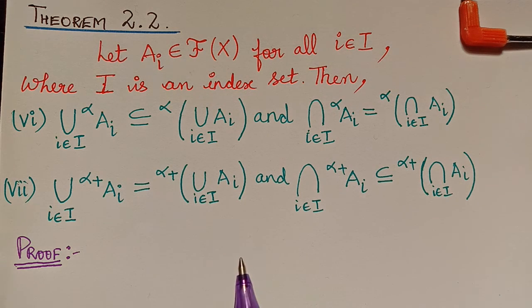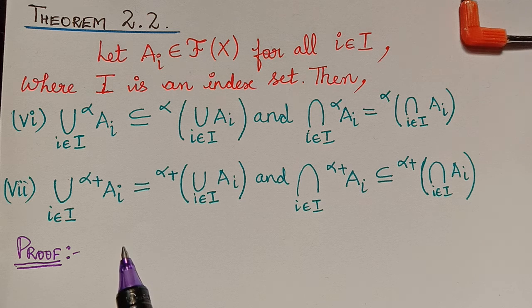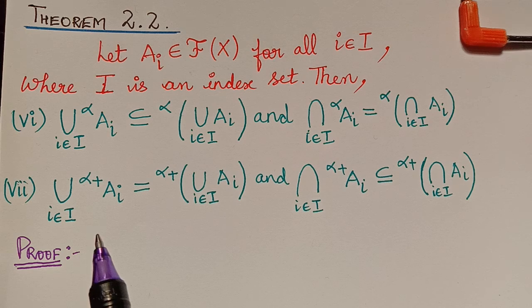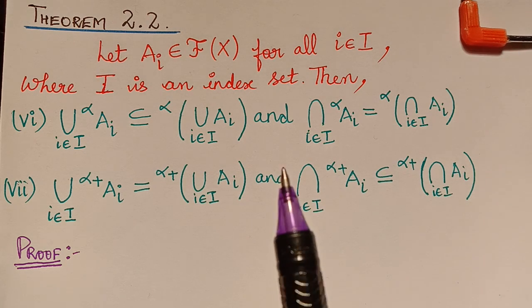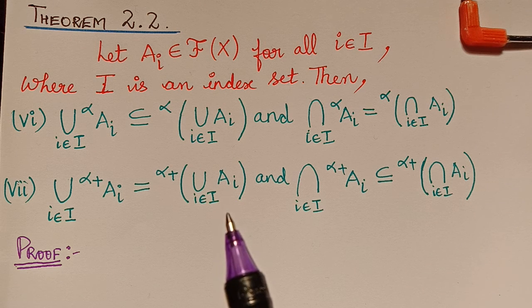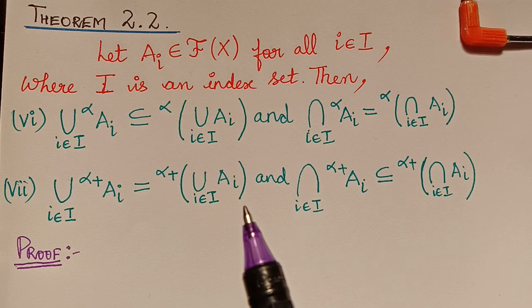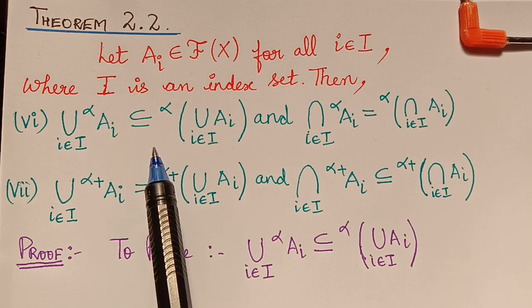Hello students. In this video we shall learn about two more properties of alpha cut and strong alpha cut with respect to union and intersection of infinite sets. We will be considering an infinite number of fuzzy sets and applying the operations of union and intersection along with the alpha cut, and then we will be proving these two properties.